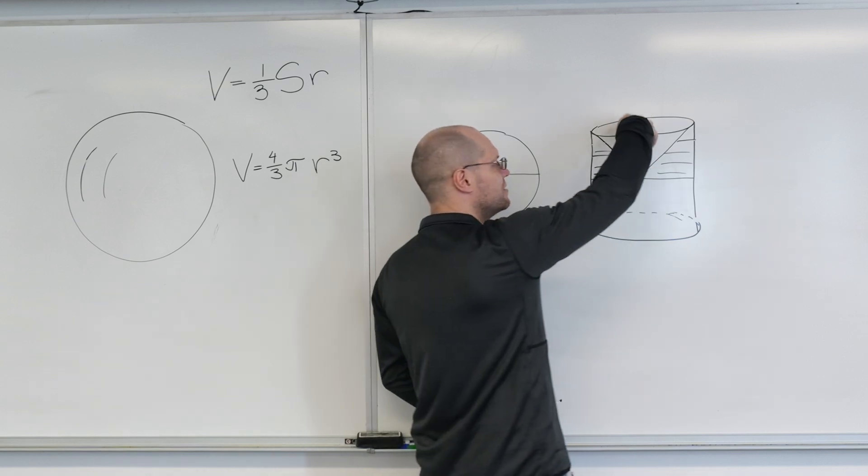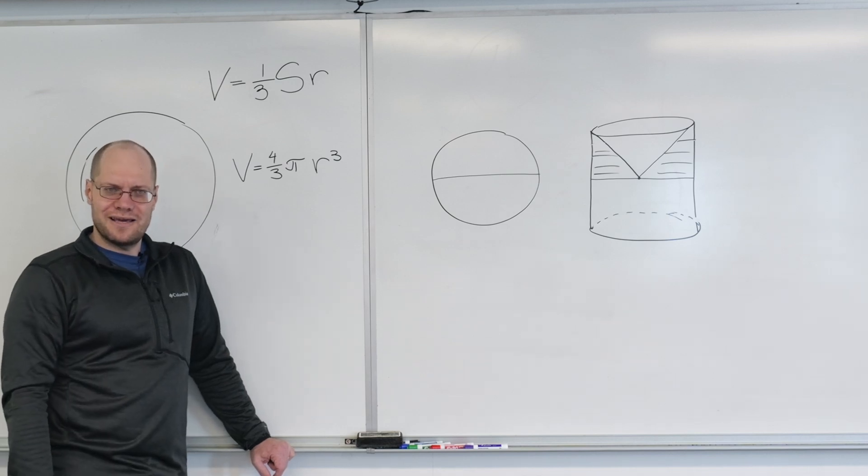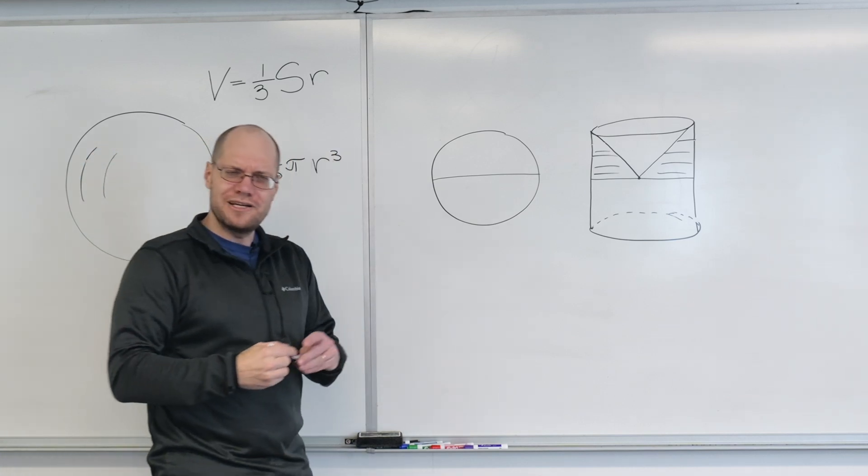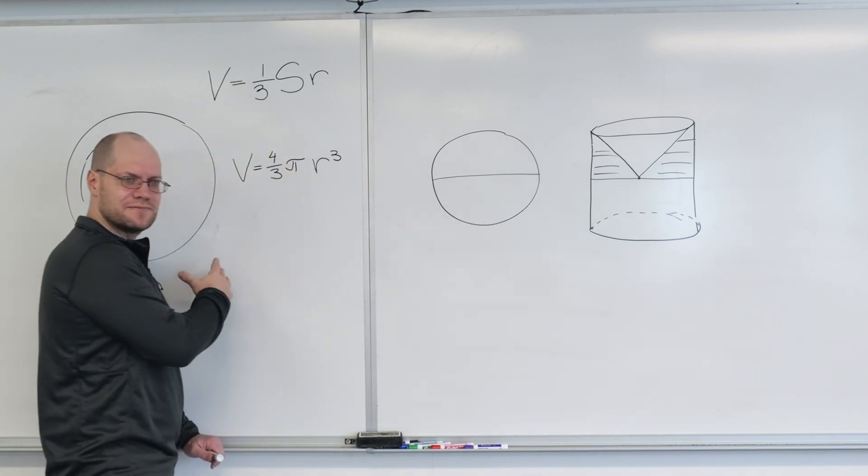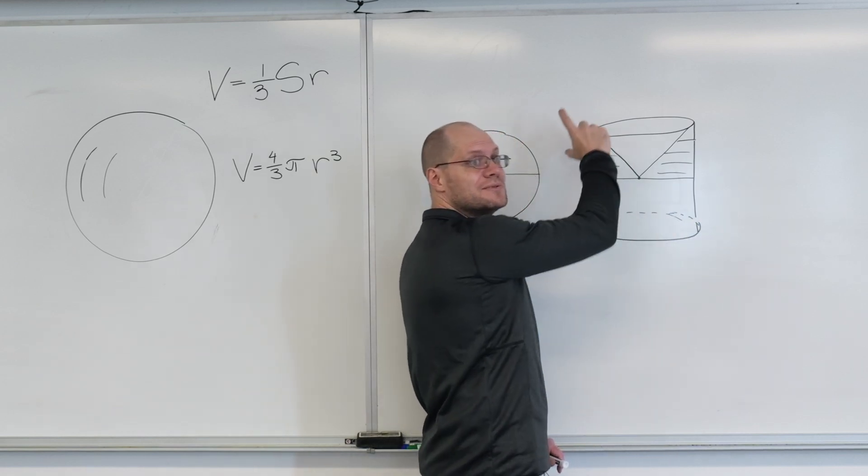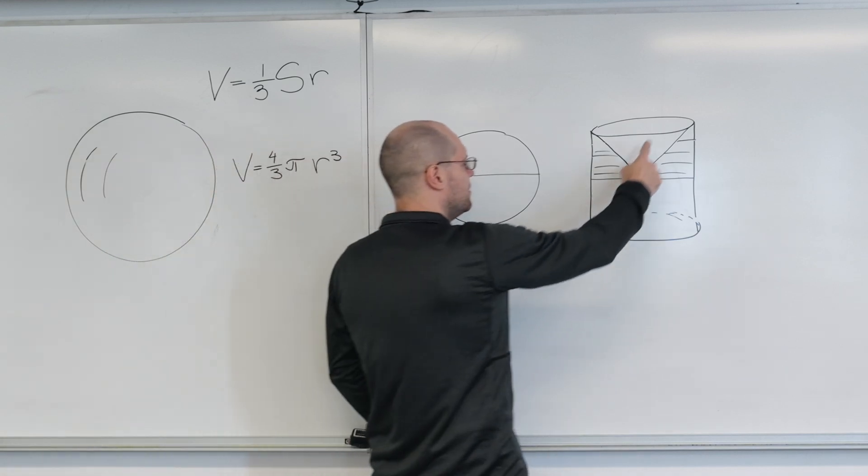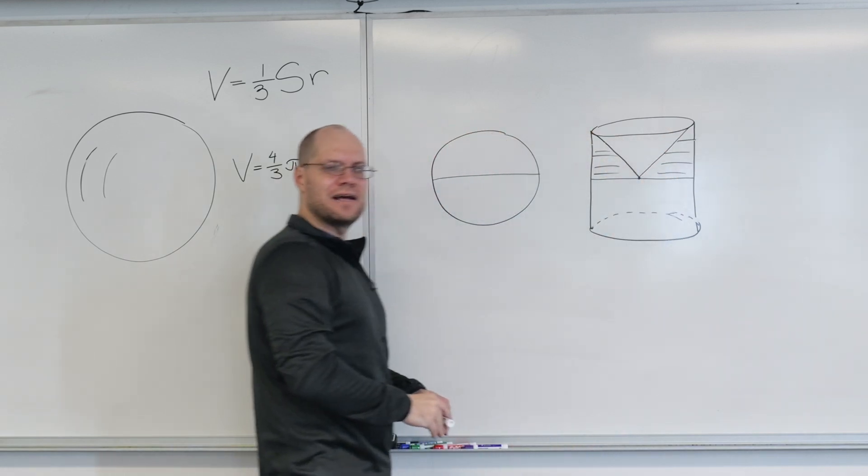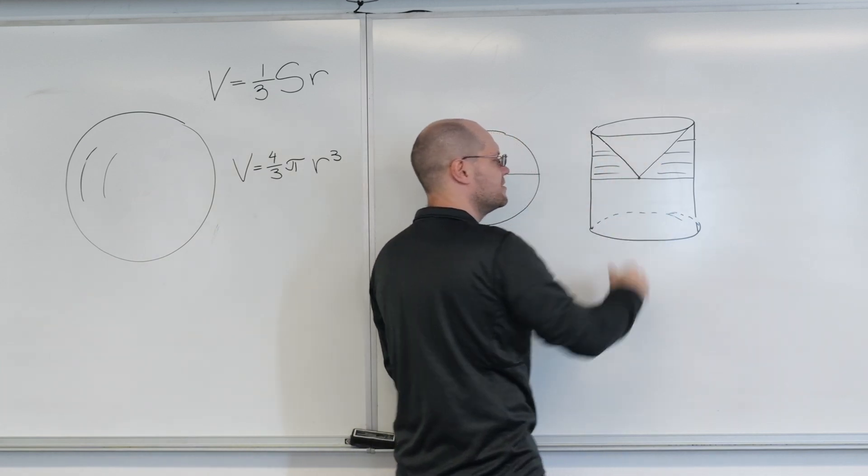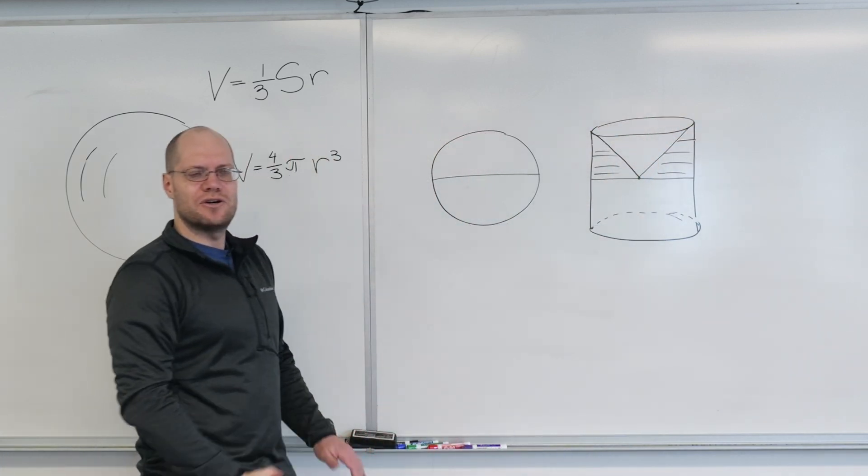You take the cylinder and you remove the cone. If you understand circles and the areas of circles, you understand the volume of a cylinder because it's just the area of the circle times the height. Archimedes had that in his pocket. The volume of any conical shape is one-third the area of the base times the height.